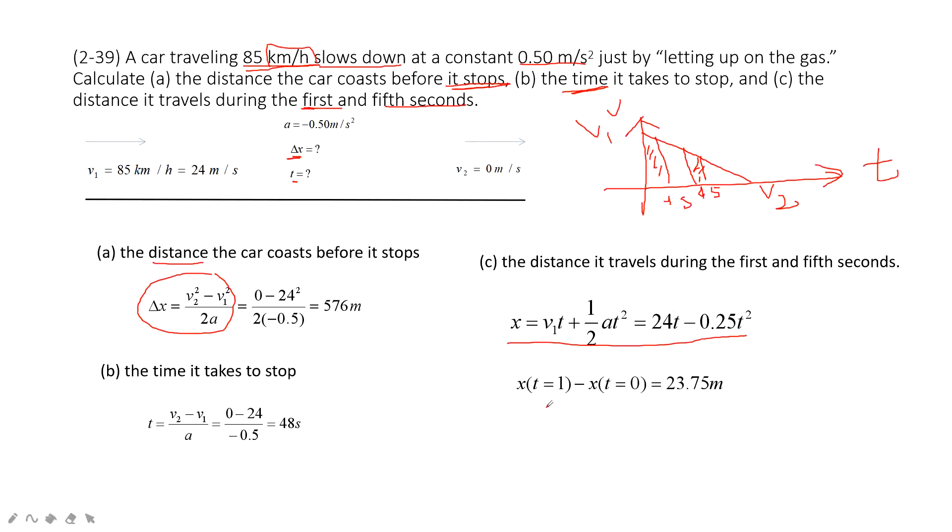Therefore, we can find it at first second. t equal to 1 minus this x minus this one. The displacement for this one is 23.75 meter. And then the distance at the fifth second. We use t equal to 5 minus t equal to 4. This is 21.75 meter.